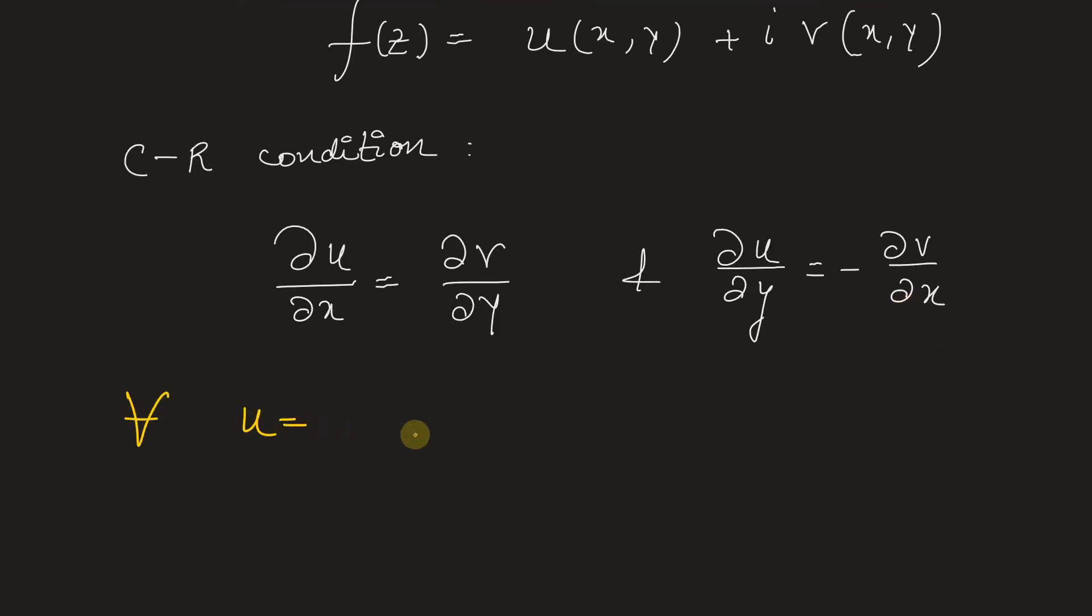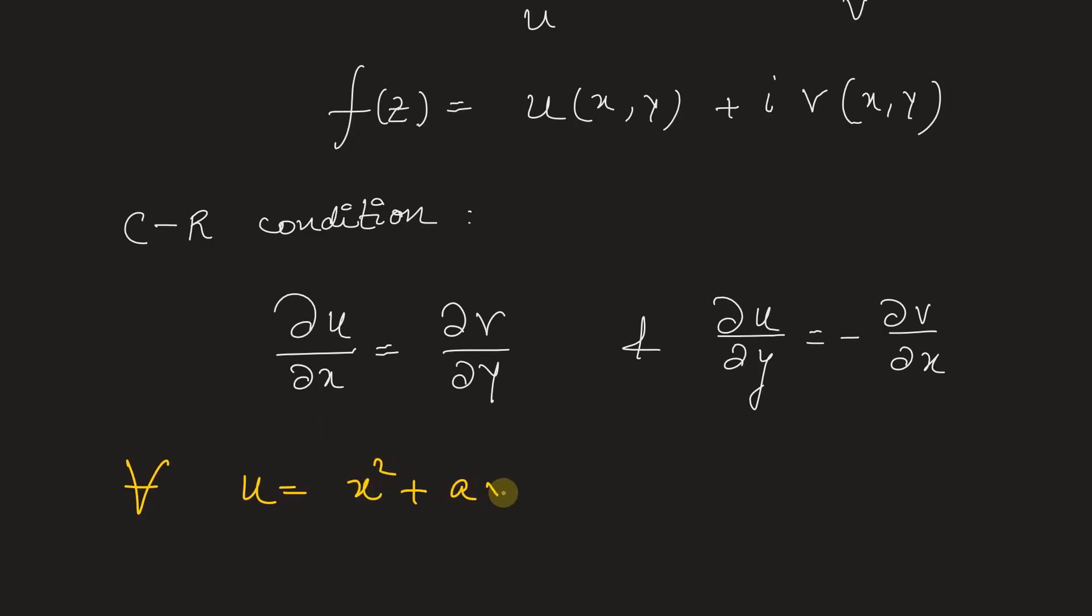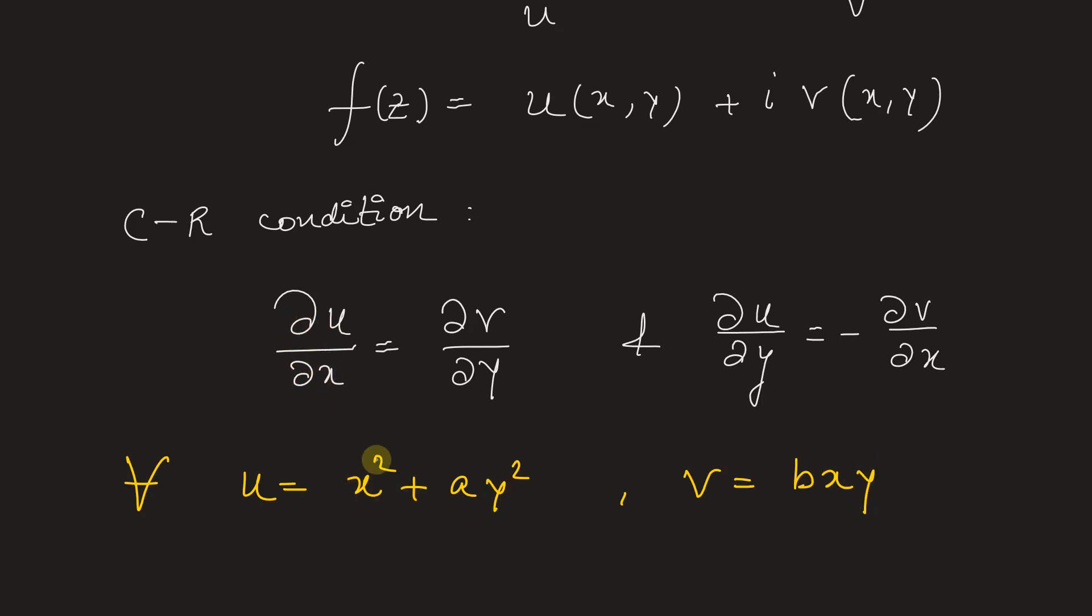We have assumed that u equals x squared plus a y squared, v equals b x y. Therefore du by dx, differentiating this equation with respect to x we get 2x, this part will be zero, equals dv by dy.